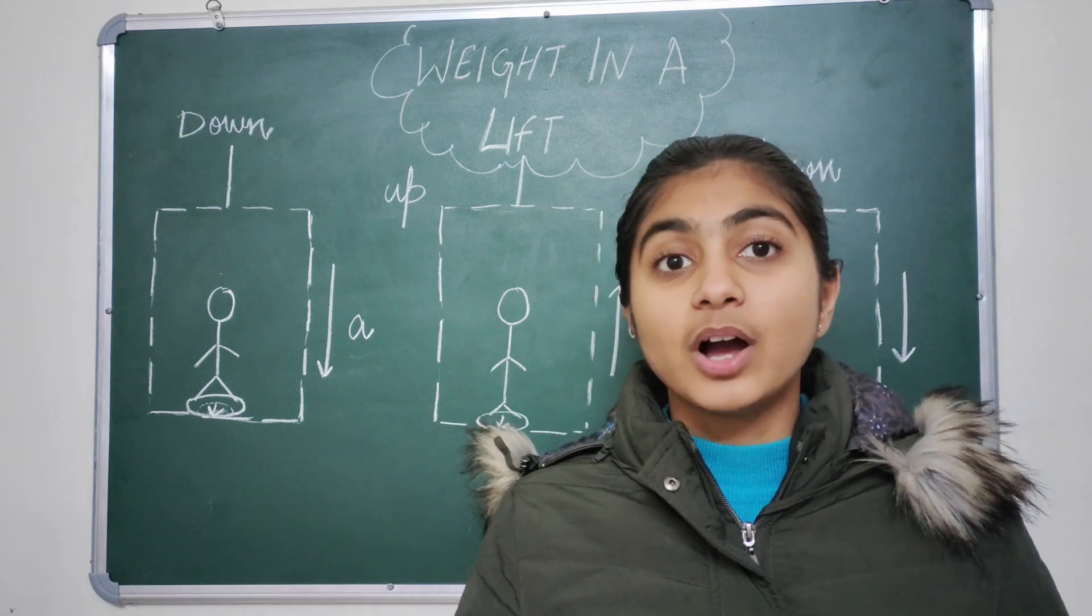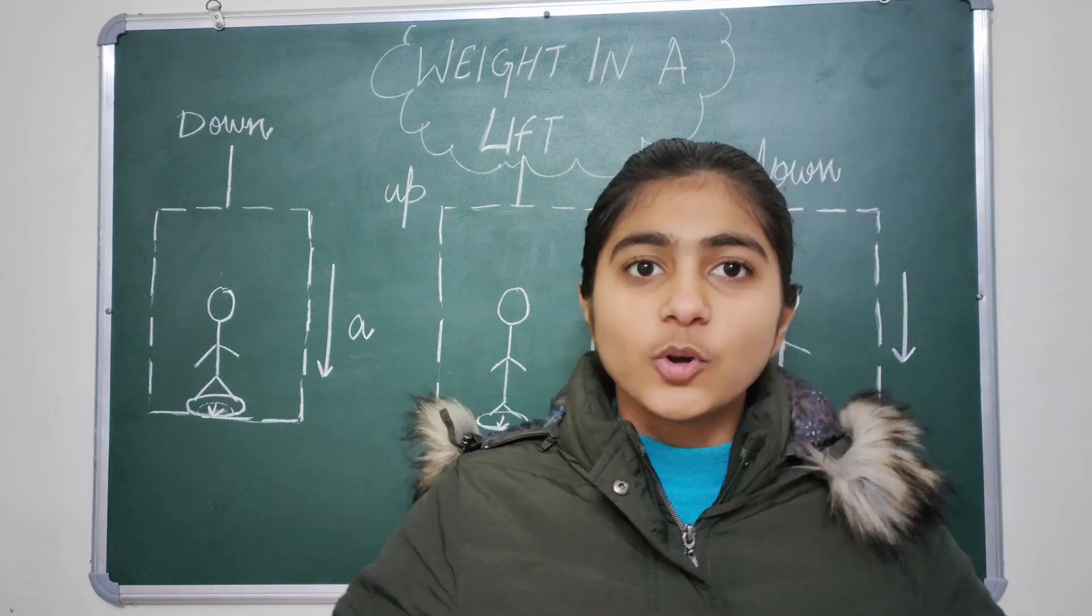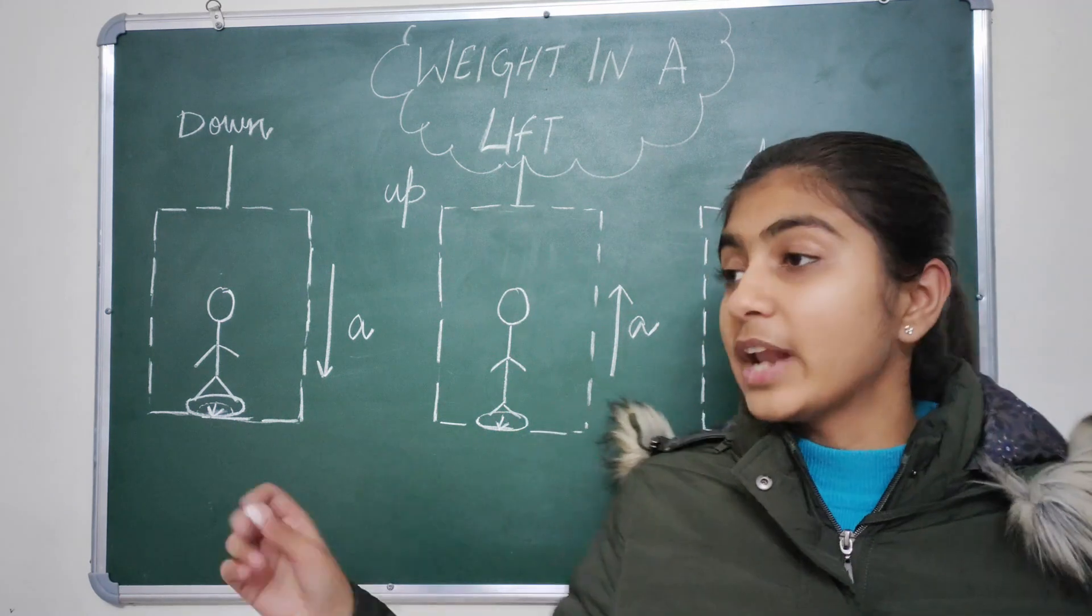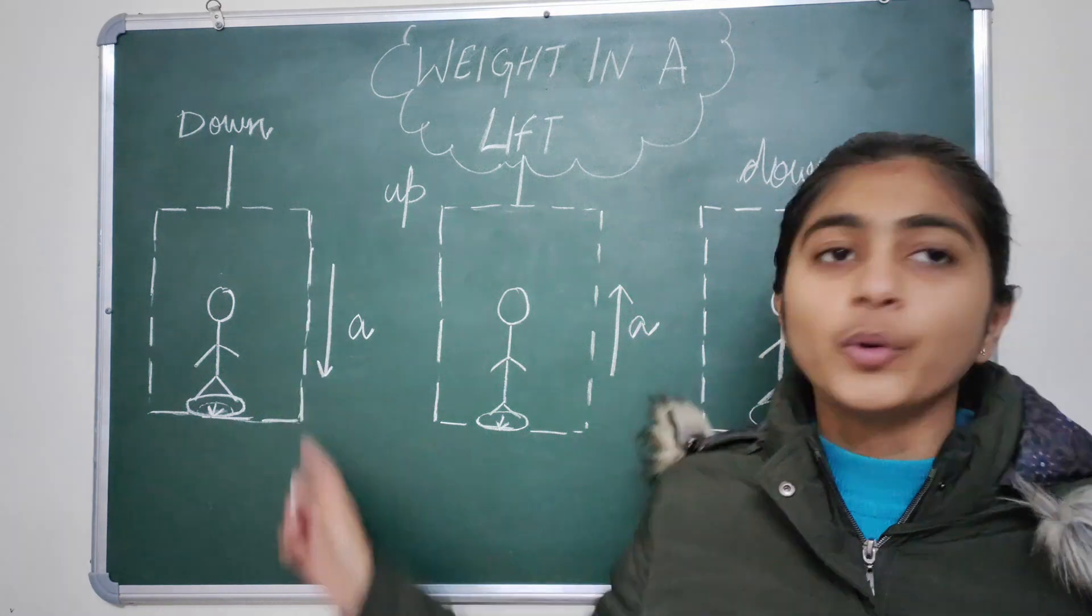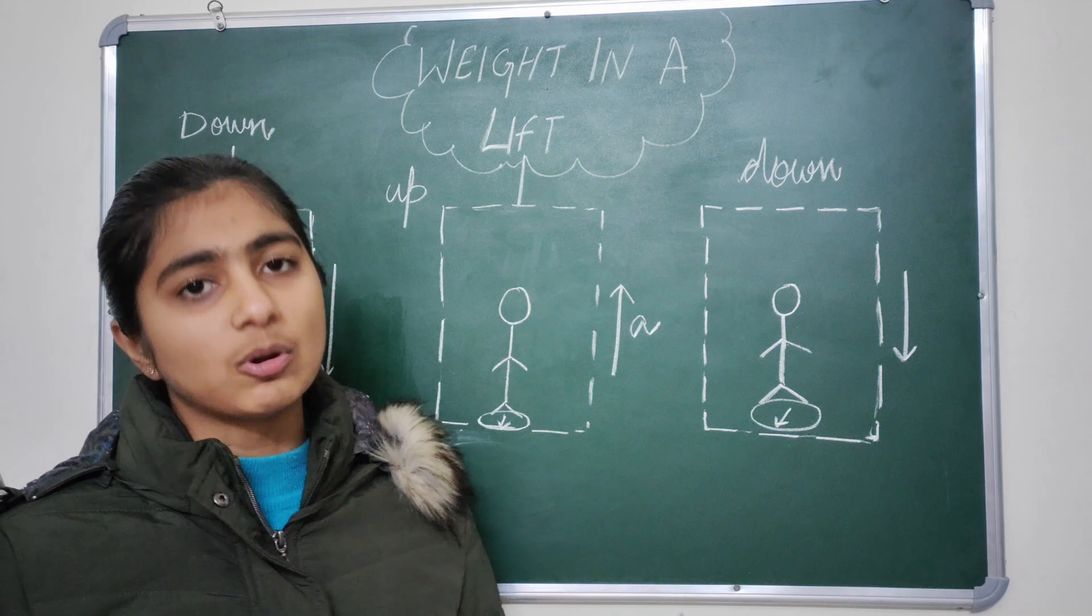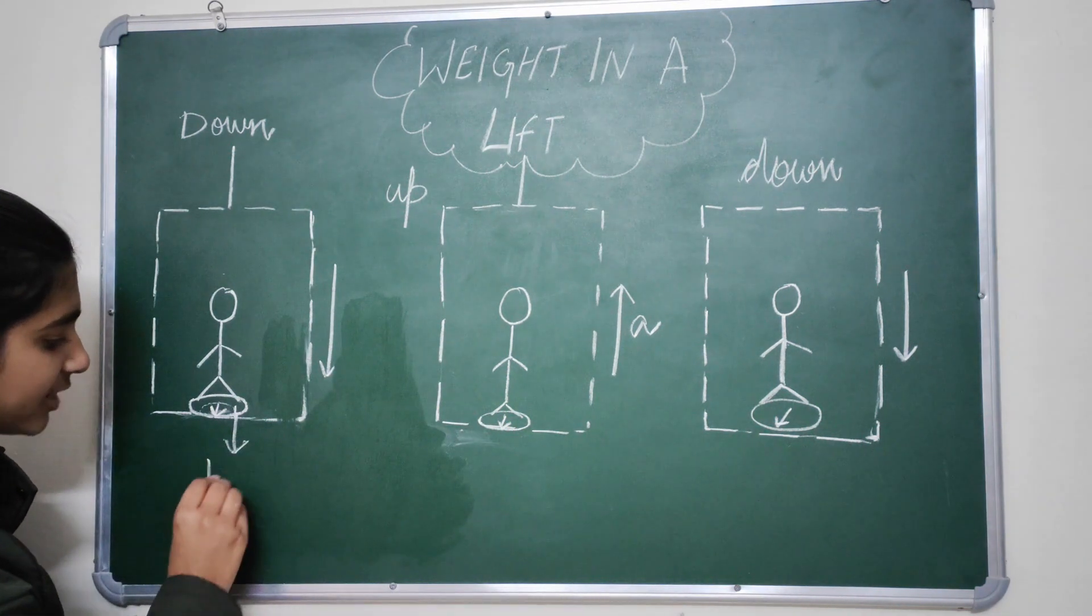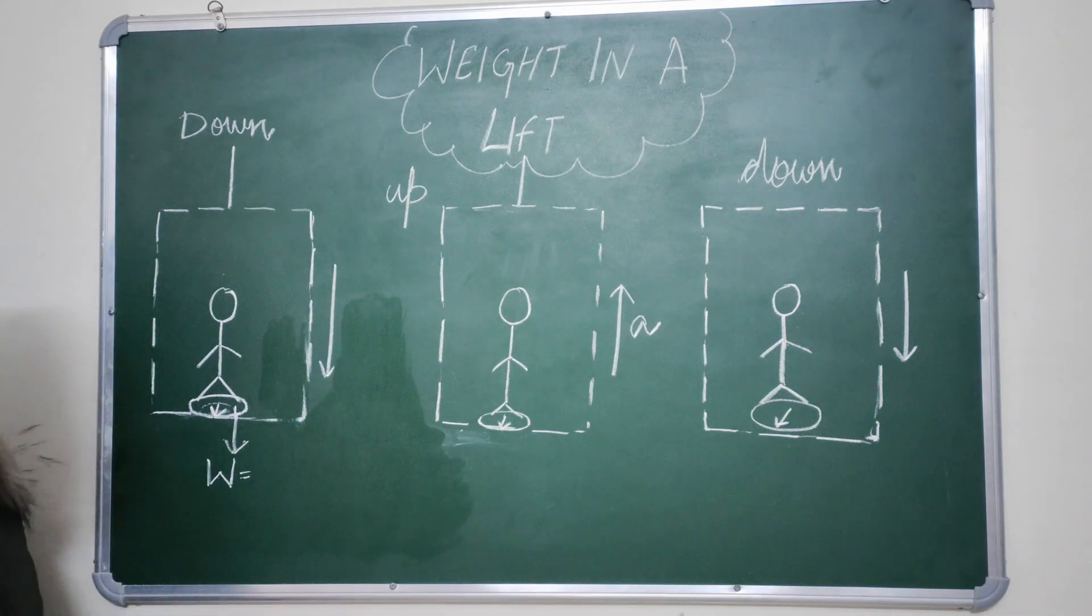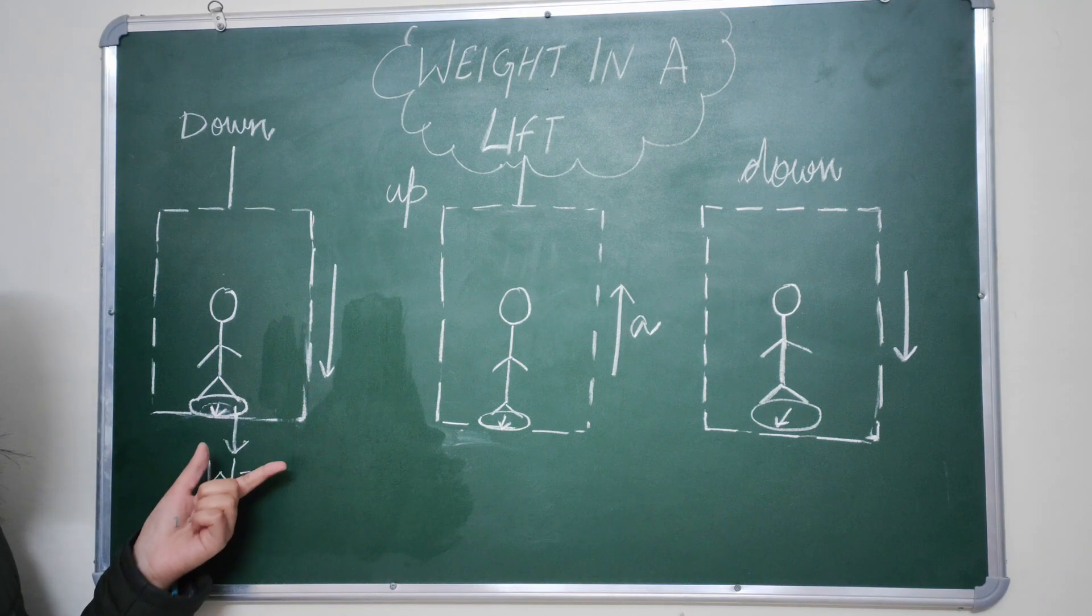So let's suppose we have a weighing machine with us and we travel in a lift with it. When the lift goes down with an acceleration a, what happens when we try to measure our weight during the lift going down? Actually we are exerting a force or weight in the downward direction, which equals the product of mass of this body into the acceleration due to gravity.